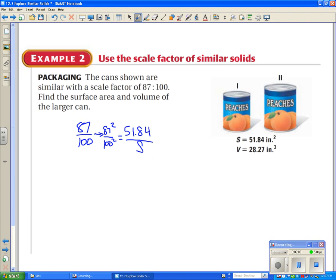Take this, do your algebra, 100 squared times 51.84 divided by 87 squared. And you get a surface area, the bigger one, to be roughly 68.49. And this is inches squared.